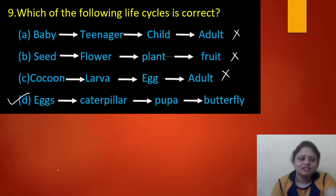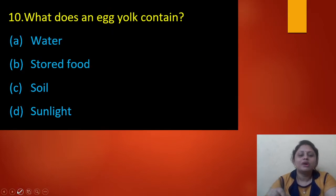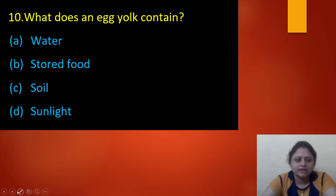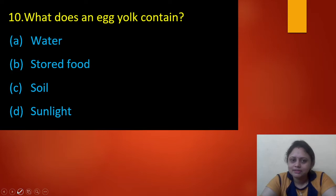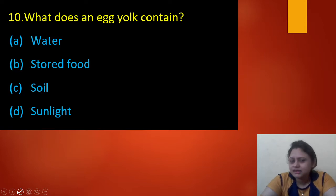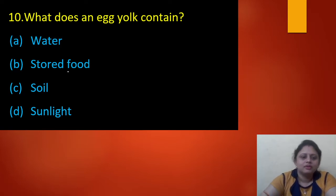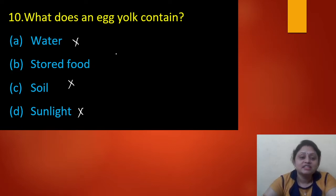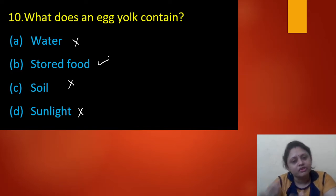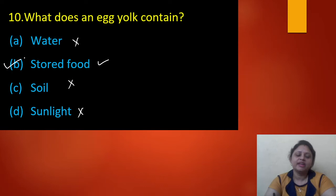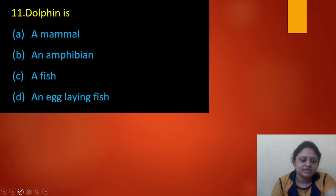Next question: what does an egg yolk contain? Option A: water. Option B: stored food. Option C: soil. Option D: sunlight. The egg yolk does not contain water, soil, or sunlight — it contains stored food for the embryo. So the correct answer is option B — stored food.